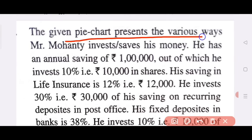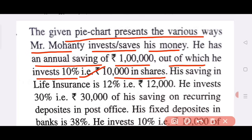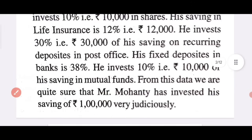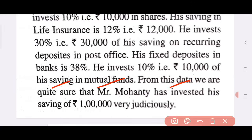The given pie chart presents the various ways Mr. Mohanty invests and saves his money. He has an annual saving of 1 lakh, out of which he invests 10 percent, that is 10,000 rupees, in shares. His savings in life insurance is 12 percent, i.e. 12,000 rupees. He invests 30 percent, that is 30,000 rupees, on recurring deposits in the post office. His fixed deposit in banks is 38 percent. He invests 10 percent, that is 10,000 rupees, in mutual funds. From this data, we are quite sure that Mr. Mohanty has invested his savings of 1 lakh very judiciously.